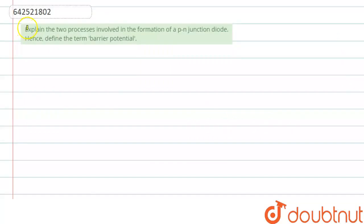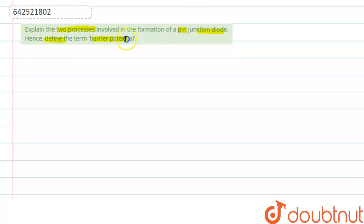Hello everyone, let's start the question. The question says: explain the two processes involved in the formation of a PN junction diode, and define the term barrier potential.